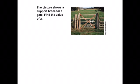Last problem for us to do. It says the picture shows a support brace for a gate. Find the value of x. This support gate creates this big x across the gate. What I can see in here is that when I look at this right here, these two angles together combine to make 180 degrees. They are supplementary angles.